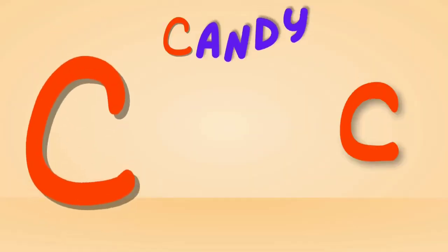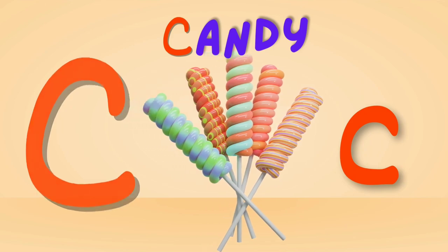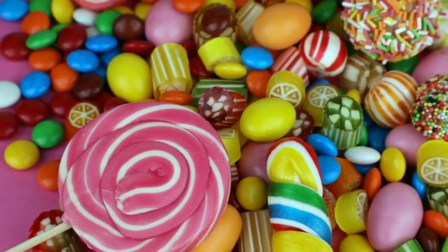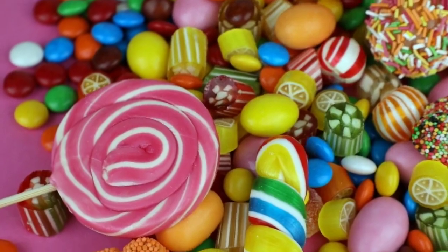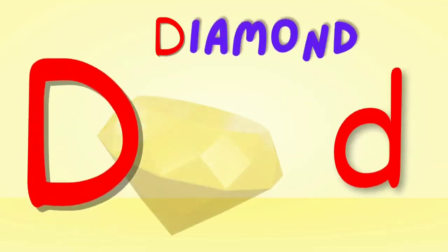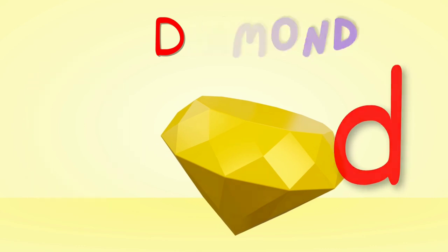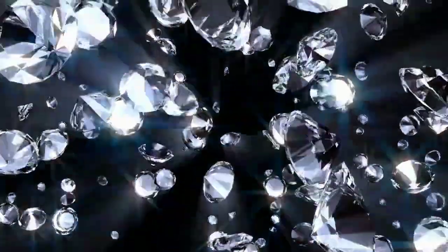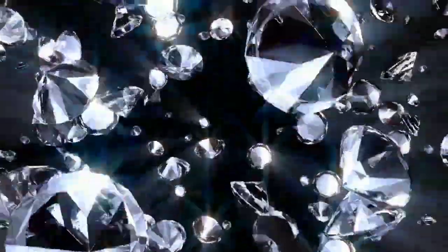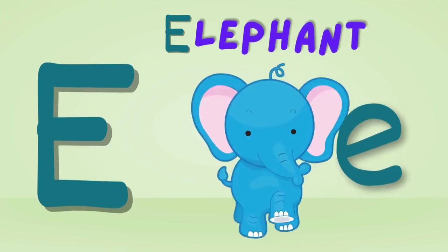C is for Candy. Candy, candy — this is a candy. D is for Diamond. Diamond, diamond — this is a diamond.